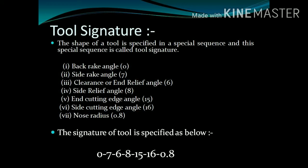When we have to define the shape of a tool, it should be defined in a special sequence. This sequence is known as tool signature. The sequence and standard values are as shown in the video. For example, 0, 7, 6, 8, 15, 16, 0.8 shows the various angles and nose radius in sequence: back rake angle, side rake angle, end relief angle, side relief angle, end cutting edge angle, side cutting edge angle, and nose radius respectively.